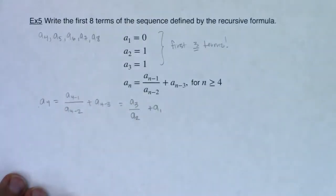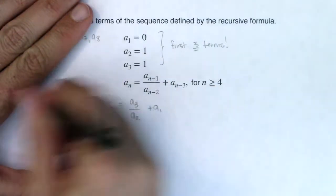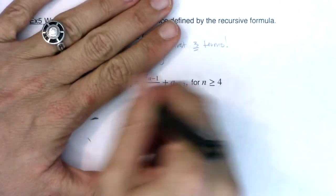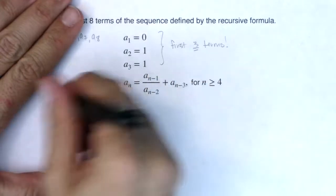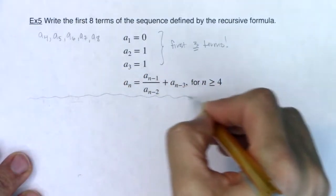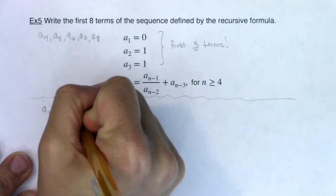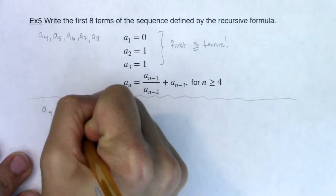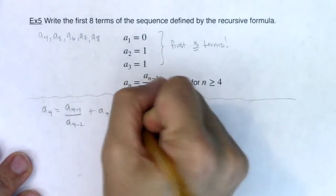And actually, let me just scooch this down a little bit. It's a little too close to this. I want to just give myself some breathing room. Okay, so as we go through this again, let me give myself a little separator.